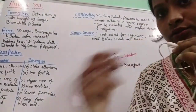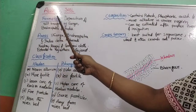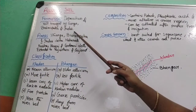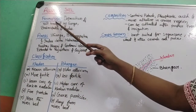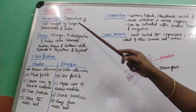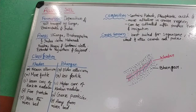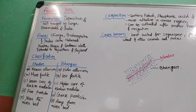So let's start. As you can see on the board, it's all about alluvial soil. First we will look at how alluvial soil is formed. Alluvial soil is formed by the deposition of silt brought by the Ganga, Brahmaputra, and Indus rivers. It is also formed by silt brought by the Mahanadi, Krishna, Kaveri, and Godavari rivers, which also bring considerable amounts of silt.